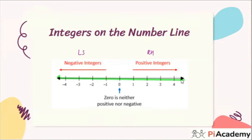An integer can be any number - it can be a positive number, a negative number, or zero. A student raised a point: an integer must be a whole number, so 1.32 cannot be an integer because it is not a whole number. That is correct - all integers must be whole numbers; they cannot be fractions or decimals. So integers are: negative whole numbers, positive whole numbers, and zero.